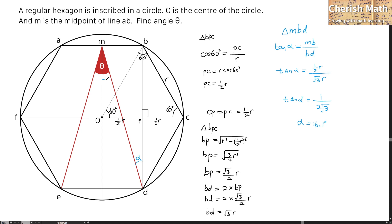The value of alpha is the same on both sides because they are alternate angles, and the left and right triangles are congruent. So theta is in fact 2 alpha. That means theta equals 2 multiplied by 16.1 degrees, giving a value of 32.2 degrees. And we solve the puzzle.